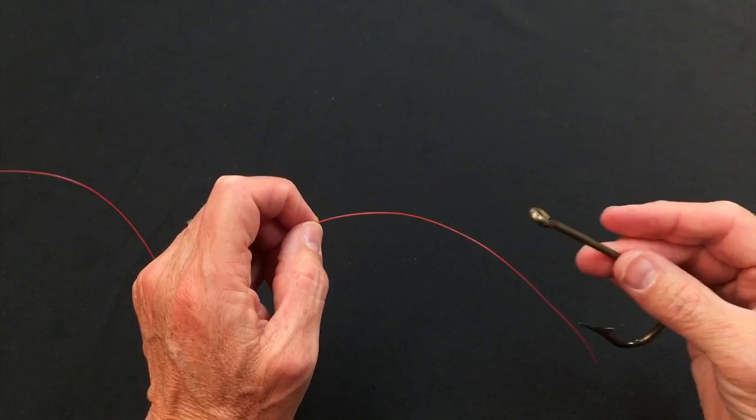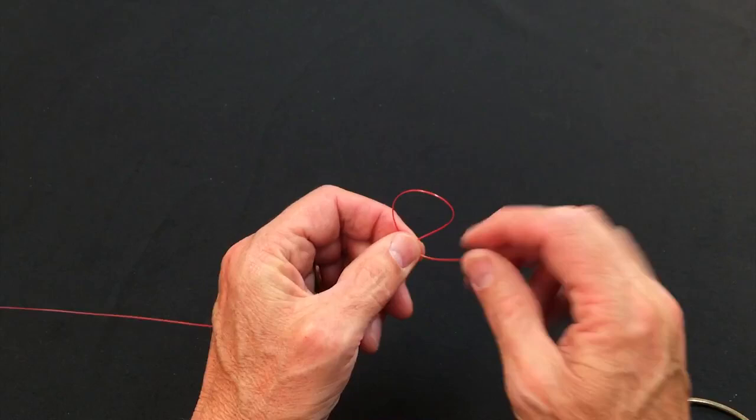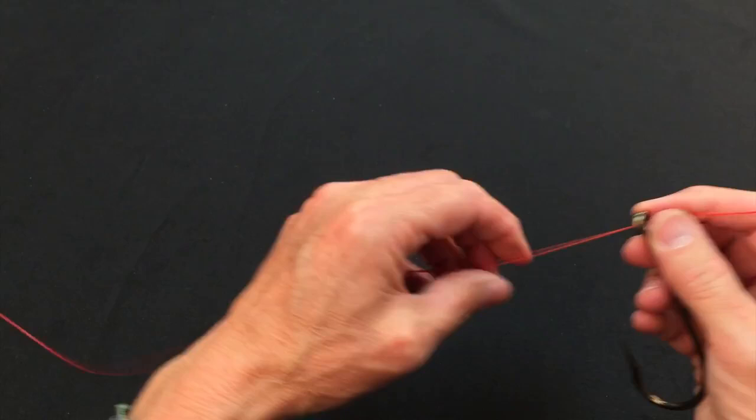So before you tie the Belize Loop, about 10 inches or so before the end, you just tie yourself a nice simple overhand knot. You then thread on the hook, and you take the tag end back and put it through the knot as though you were undoing the knot.